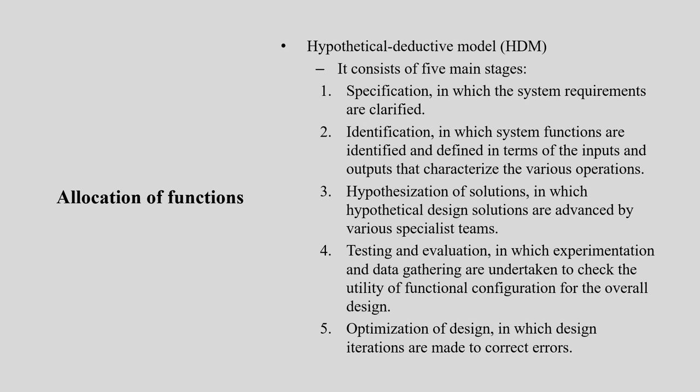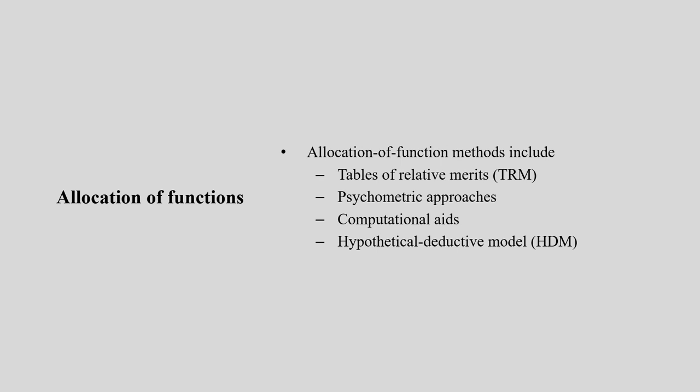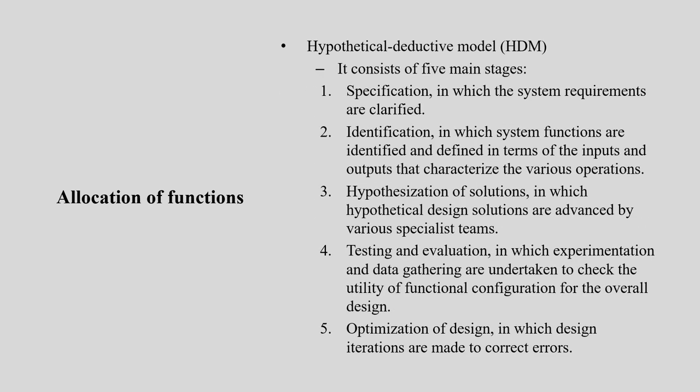The second important method is the HDM — Hypothetical Deductive Model. It consists of mainly five stages. First is specification, in which the system requirements are clarified. Second is identification, in which system functions are identified and defined in terms of inputs and outputs that characterize the various operations.